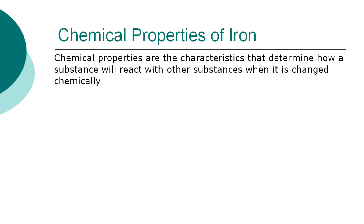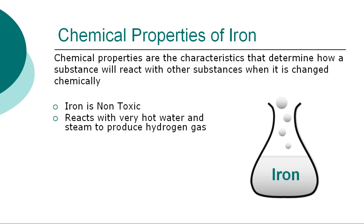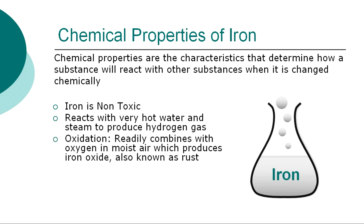The chemical properties are the characteristics that determine how iron will react with other substances when it is changed chemically. The chemical properties of iron are: it is non-toxic; it reacts with very hot water and steam to produce hydrogen gas; oxidation — it readily combines with oxygen in moist air, which produces iron oxide, also known as rust; solubility — it dissolves in acids.